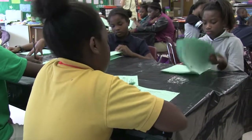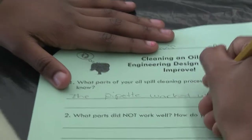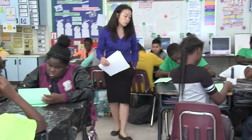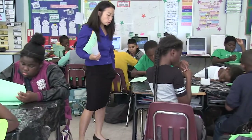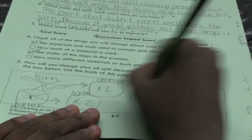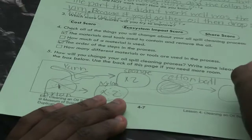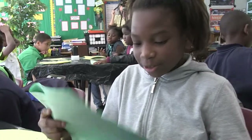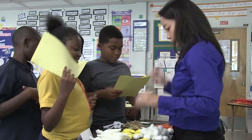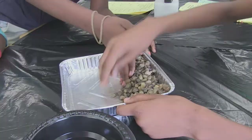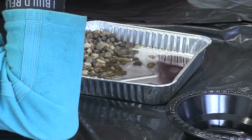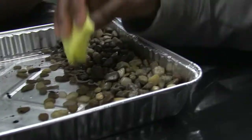Just take a minute and reflect. Go back to what your group did yesterday. If you're ready, move to number four — check all the things you will change about your oil spill cleaning process. We got to add the cotton ball, and we need two sponges, one yarn, two cotton balls. I'm going to suck up oil in a rock first, and don't forget the edges.